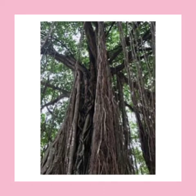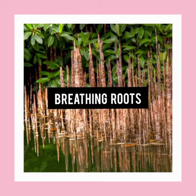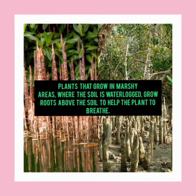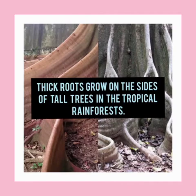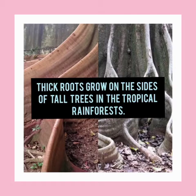Aerial roots support the heavy branches of the tree and help in breathing and taking in moisture from the air. Breathing roots: plants that grow in marshy, waterlogged areas grow roots above the soil to help the plant breathe — mangrove trees have such roots. Buttress roots: thick roots grow on the sides of tall trees in tropical rainforests to support the plant and help it absorb more nutrients.